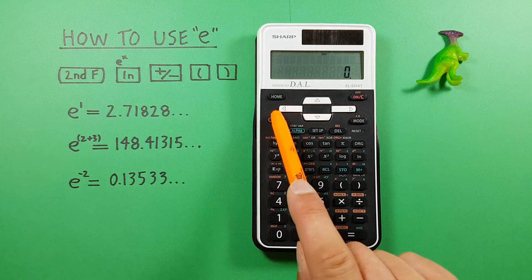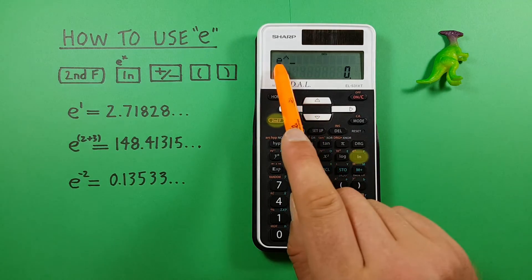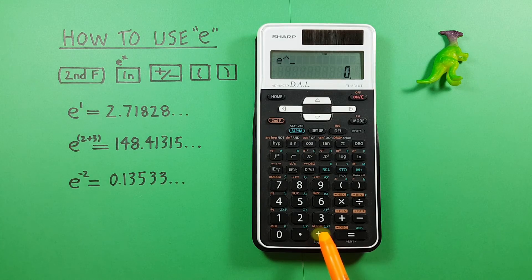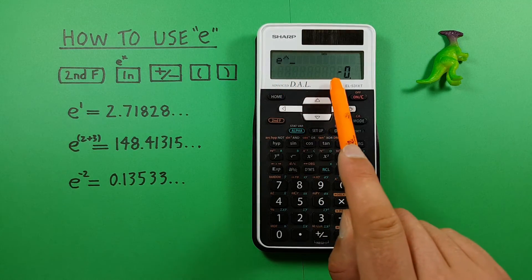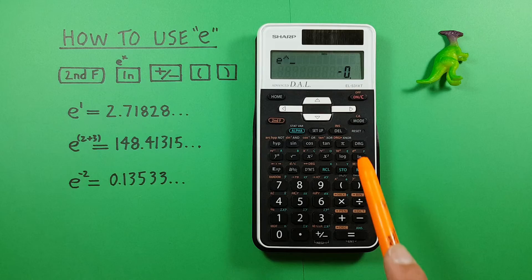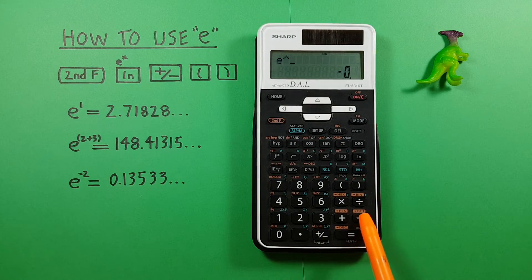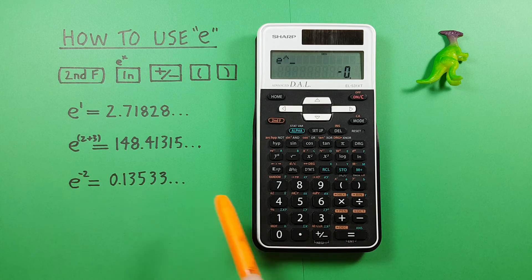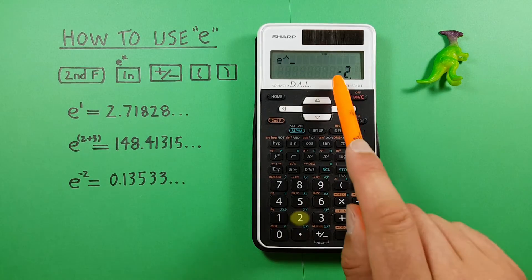To do this we go second ln to get our e on the screen and then we use the positive negative key to place a negative sign in front of our exponent. It's important to use this key and not the subtraction key because that will give you a different result. And then our exponent of 2. So we have a negative 2.